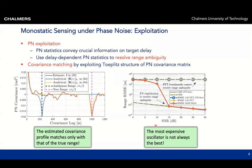Now we go one step further and try to exploit the phase noise. We use the fact that the phase noise statistics are delay-dependent to resolve range ambiguity. Range ambiguity means that when a target is very far away it may appear as being nearby. But by looking at the empirical phase noise covariance we can actually see that the target should be far away. The right figure shows the range RMSE as a function of SNR for a target that is very far away, and we see that standard methods, even without phase noise, cannot resolve this range ambiguity — the far-away target appears to be very close.